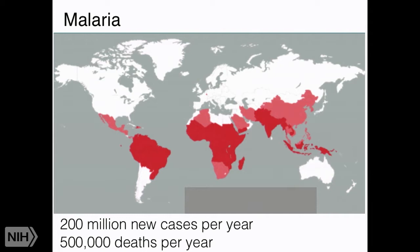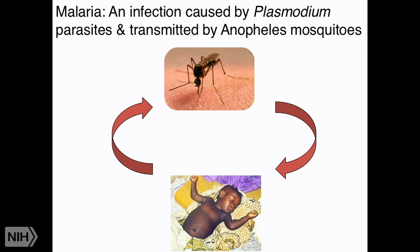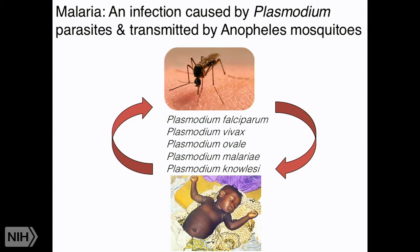There are five species of plasmodium that cause malaria in humans. Today we're largely going to be focusing on plasmodium falciparum, which is responsible for 95% of the deaths from malaria in the world. We'll also touch on plasmodium vivax, which is quite prevalent as well and responsible for a significant amount of morbidity and a small amount of mortality.